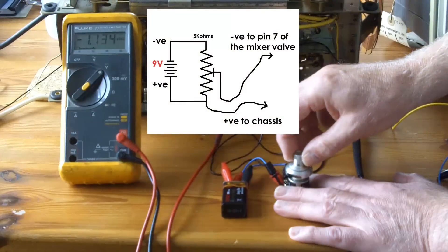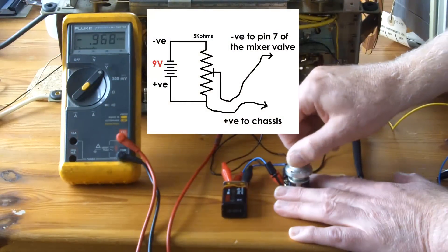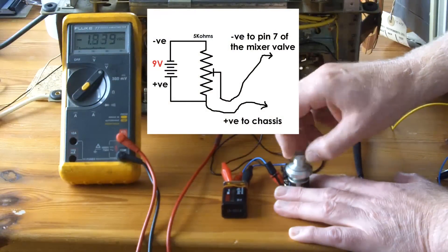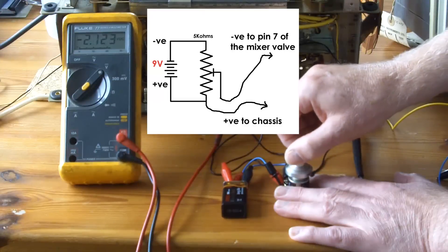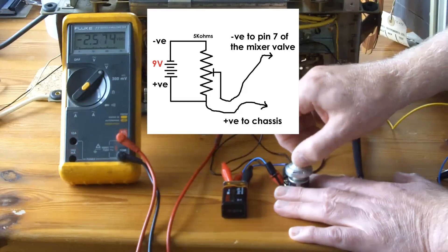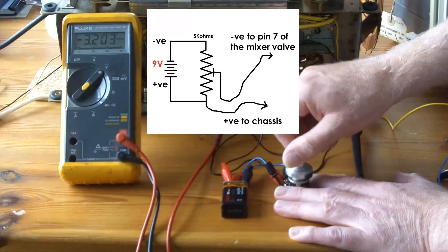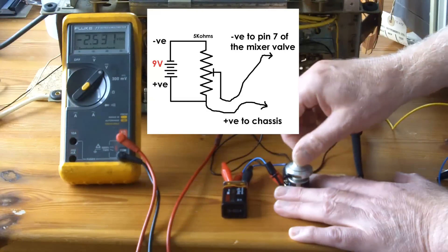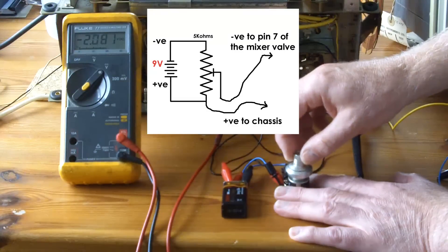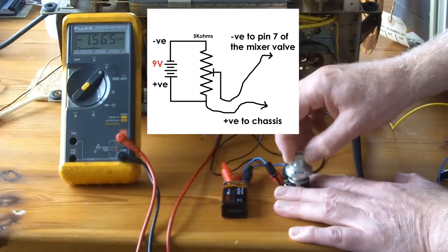10 turn pot or potentiometer connected across a 9 volt battery and I have the positive of the battery connected to ground or the chassis. And the wiper of the pot is connected to pin 7 of the mixer valve.